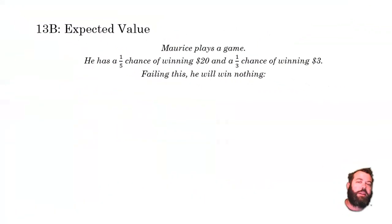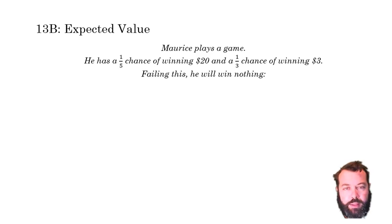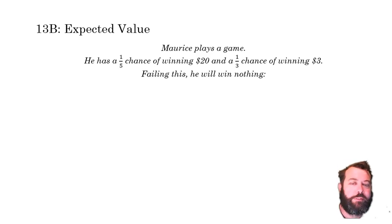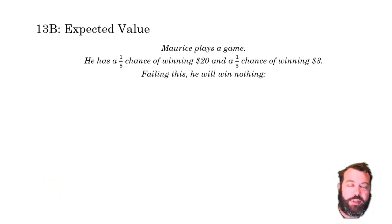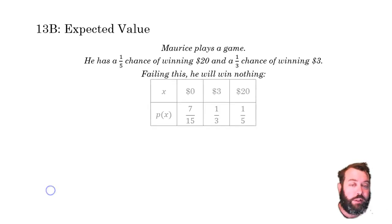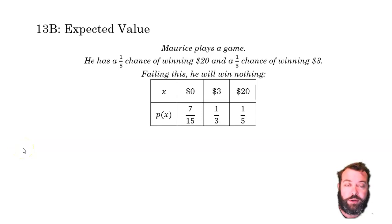I'm going to kick it off with a teaser scenario. Here's Maurice. Maurice is playing a game. There's a 1 in 5 chance that Maurice will win $20, a 1 in 3 chance that he would win $3, and if he doesn't do either of those things he will win nothing. We can represent that with a probability distribution. There are three values: $0, $3, and $20.